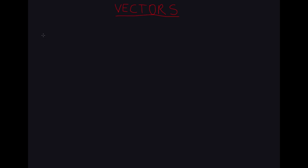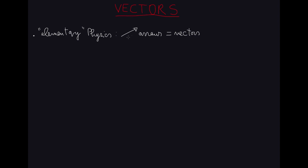Probably the best place to start talking about vectors is elementary physics. In elementary physics, we often deal with arrows to represent certain real-life situations which otherwise could not be fully expressed by using just numbers. Arrows are often called vectors in this context.